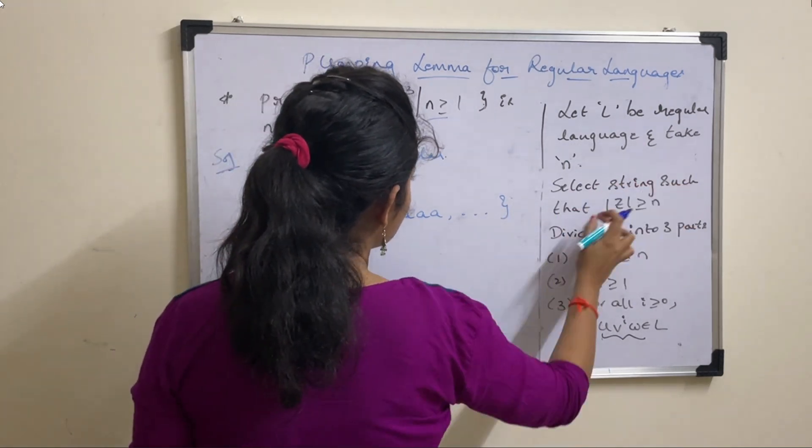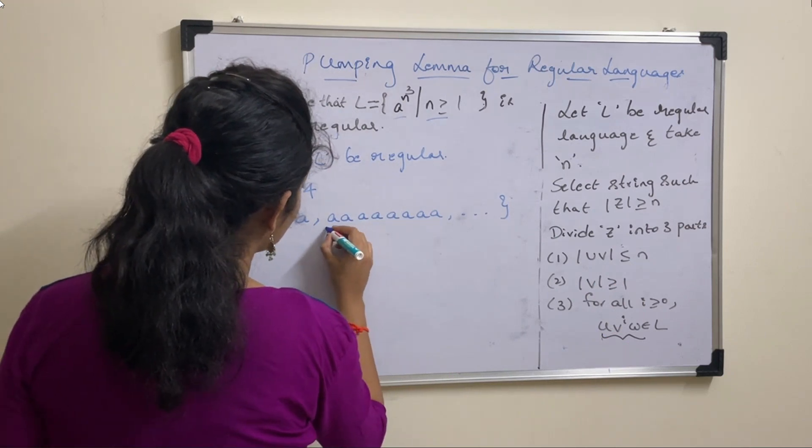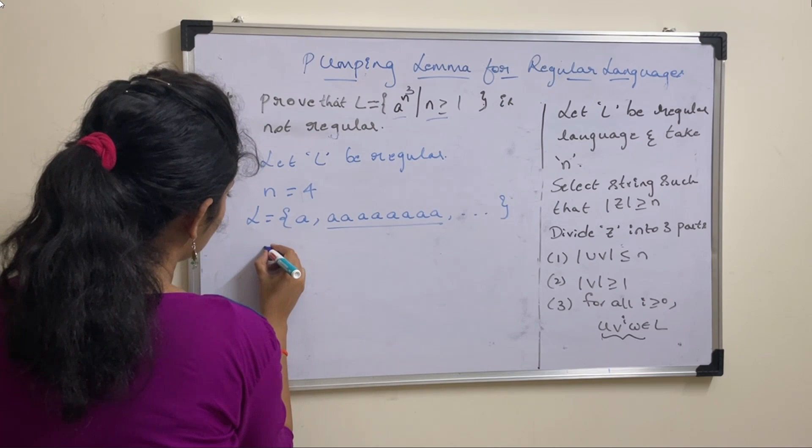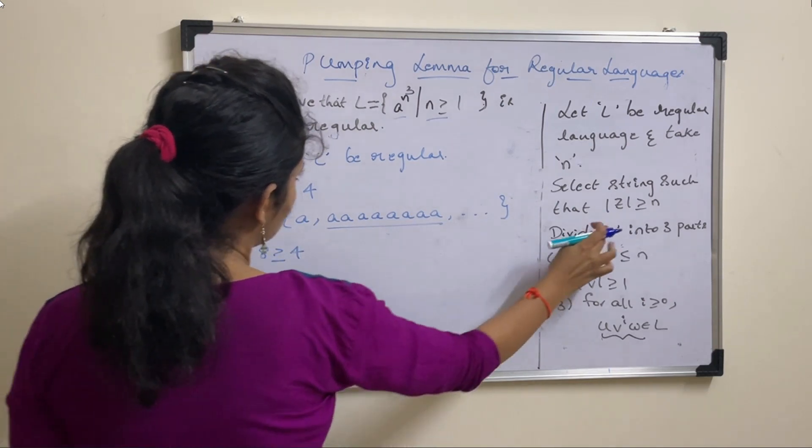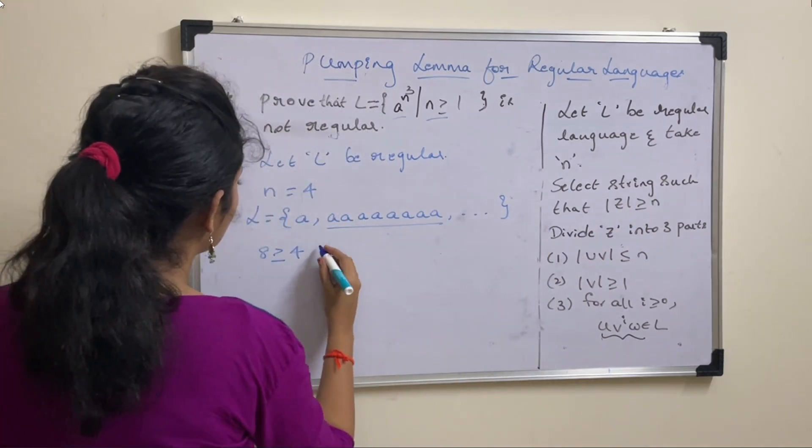Now select string such that mod z greater than or equal to n. So here you can select the string and length of the string is 8, so 8 is greater than or equal to 4. Mod z means length of the string, 8 is greater than or equal to 4, condition true.